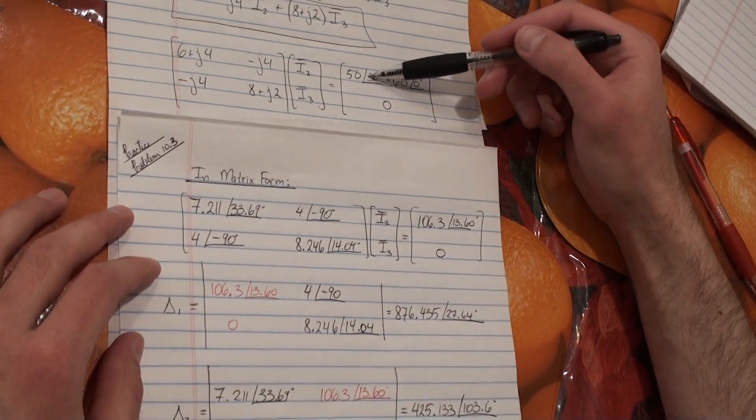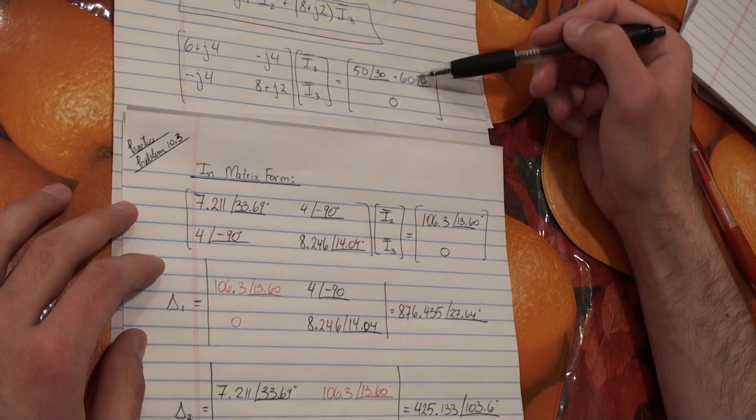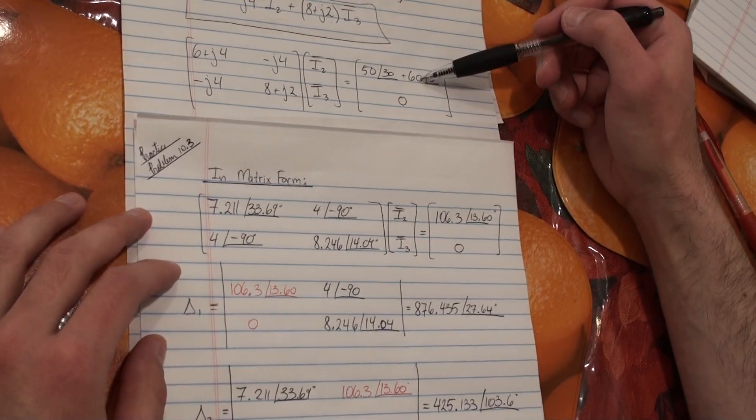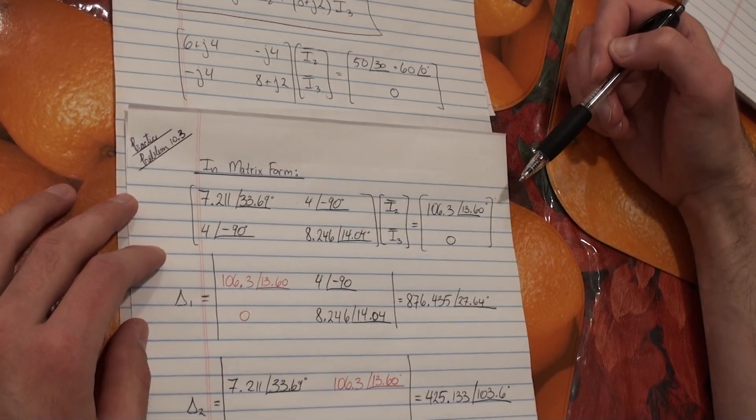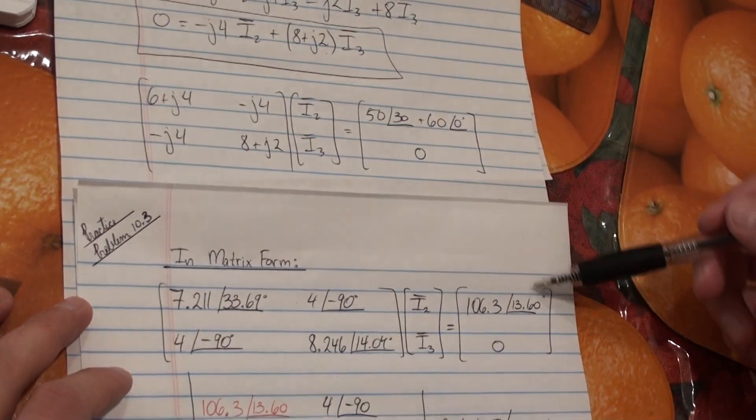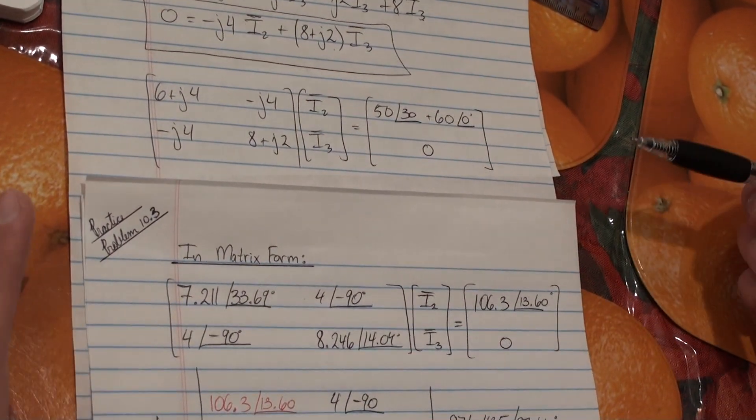These two polar phasors, it's difficult to add them in polar form. It's easier if they were in rectangular form. But if you were to add them, this is what you would get. So overall, this whole system of equations is exactly the same as this. No difference.